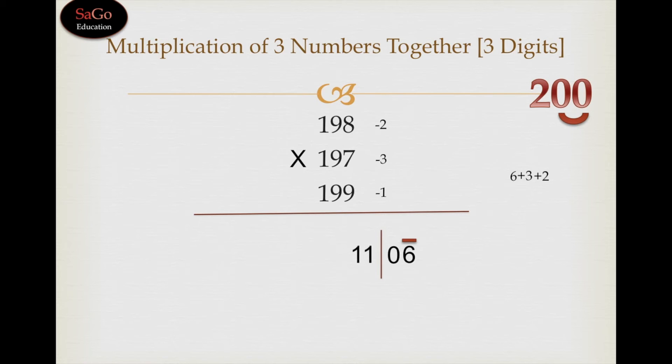Write down 11, put a slash. Next step, take any number—let's take 198—and leave the front digit which is minus 2, and subtract the other two digits. 198 minus 3 minus 1 would give us 194. Write down 194. Now multiply the middle digit, which is 11, by 2 because base is 200, and multiply 194 by the square of 2.